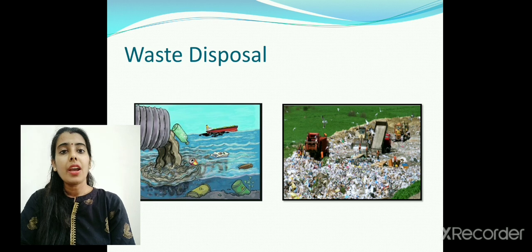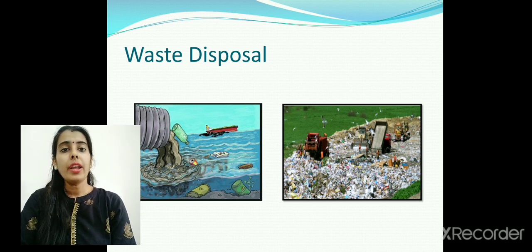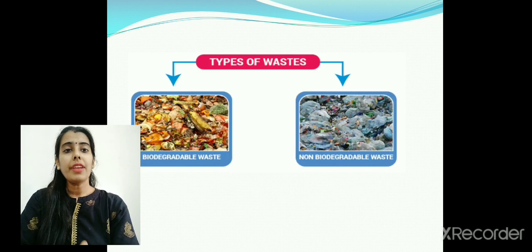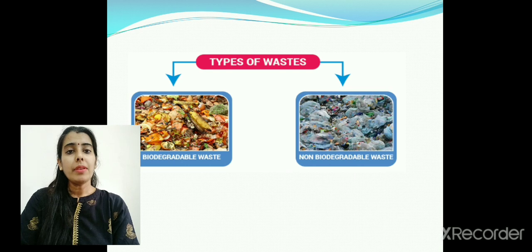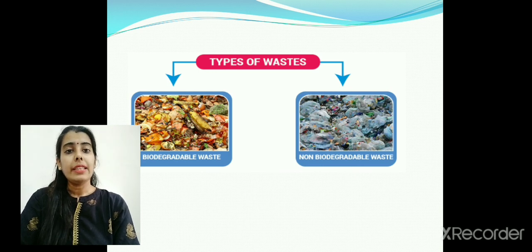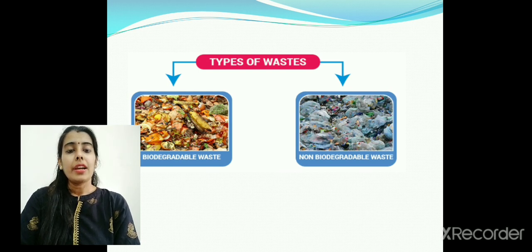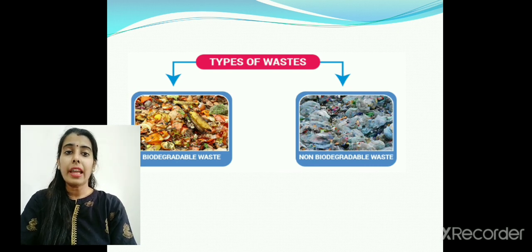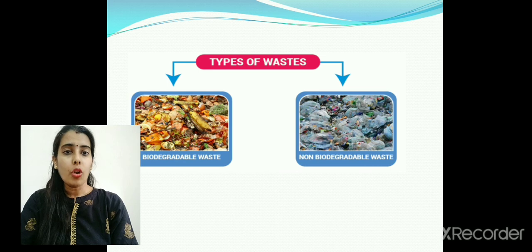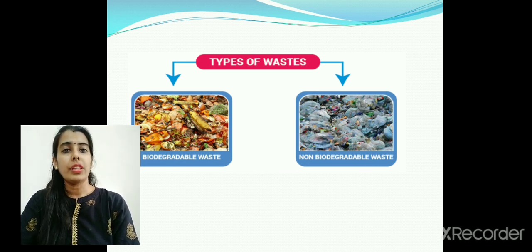When waste is thrown in landfills, waste segregation is done. On what basis? Waste can be categorized into two parts: biodegradable waste and non-biodegradable waste. Biodegradable waste are those substances which are obtained from living matter and are organic in nature. Examples include fruit peels, vegetable peels, kitchen waste, or garden waste. These substances derived from living parts can get decomposed and mixed into the soil.